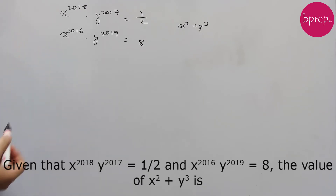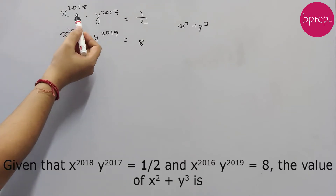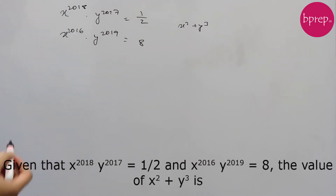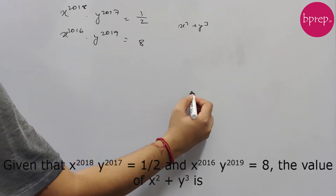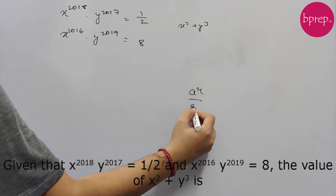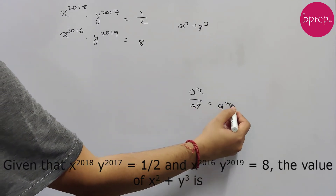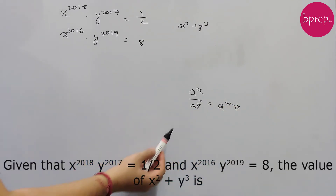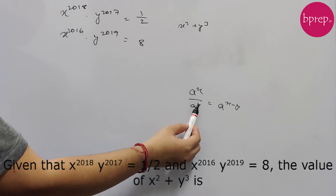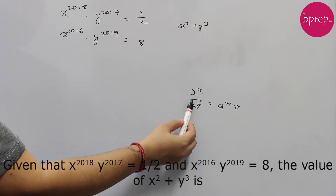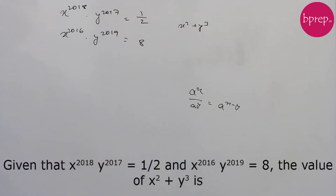We will be using one concept here. Since the numbers are expressed in terms of powers of x and y, if a number is expressed as a to the power x divided by a to the power y, this can be written as a to the power x minus y, because the base is the same and when dividing, the powers can be subtracted.